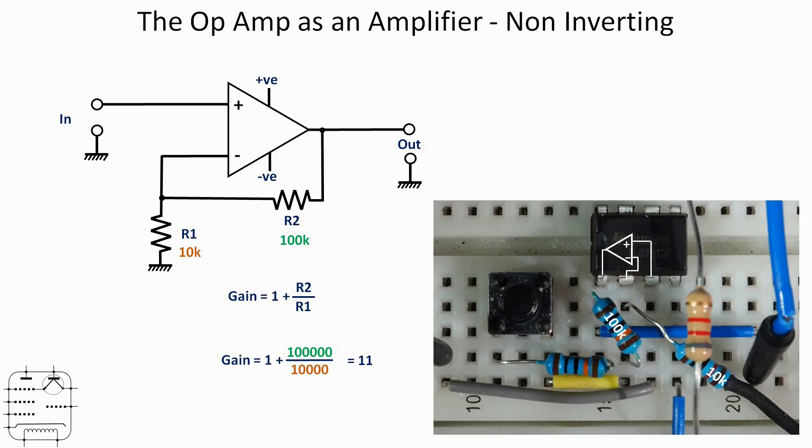And finally there is another thing to point out. There's a push button switch and a second 100k resistor just below the first one. That allows me, if I press the switch, to put a second 100k resistor in parallel with the first one. Two 100k resistors in parallel will give us an actual resistance of 50k.